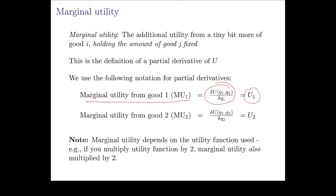Similarly, the marginal utility from good 2, MU2, is the partial derivative of utility with respect to good 2 — represented as U2. One important thing to note is that marginal utility depends on the specific utility function we're using. If we multiply the utility function by 2, the derivatives are multiplied by 2. If we take the square root, that changes the derivatives as well. Remember, there are many utility functions that describe the same preferences, but which utility function you use matters for the marginal utilities.